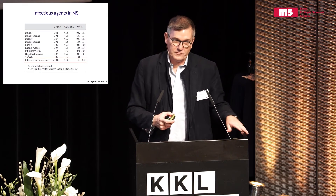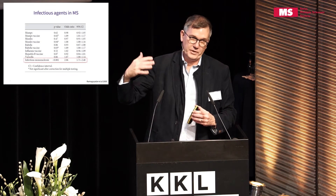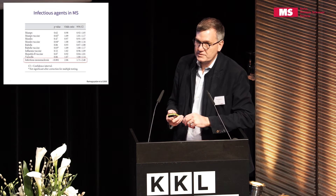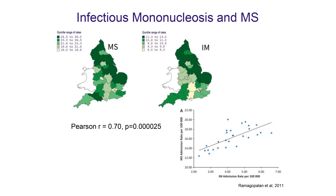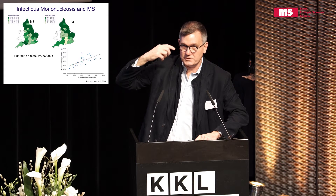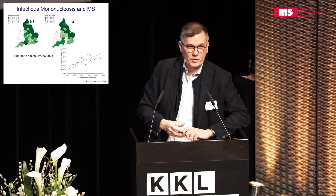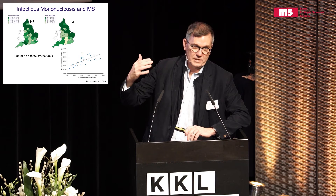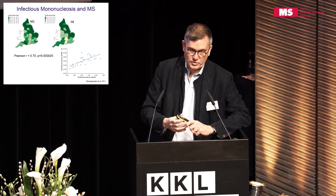That brings us to which virus. Of all known viruses, the only one that keeps coming up over and over again in all studies is EBV — Epstein-Barr virus. The real risk factor is infectious mononucleosis. If you have glandular fever or infectious mono, it usually means late infection. Getting infected late puts up your risk by between two and two-and-a-half times background, and this risk is there for the rest of your life. There is a very close correlation between MS prevalence and infectious mono prevalence, which follows a similar latitudinal gradient to MS.